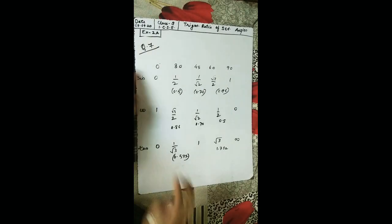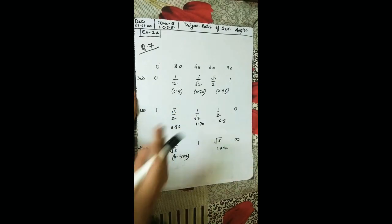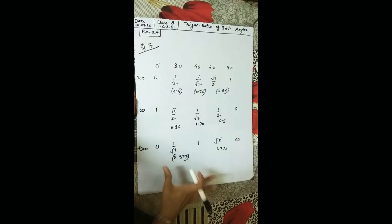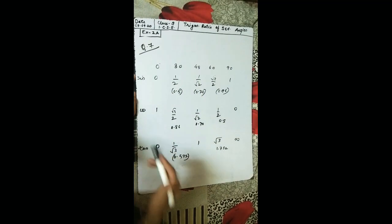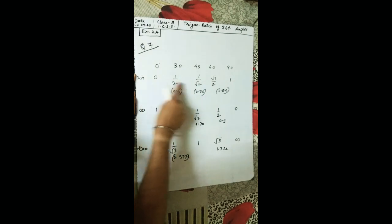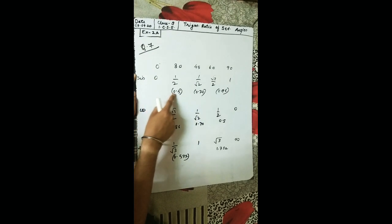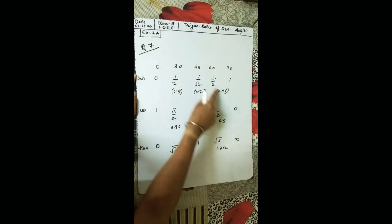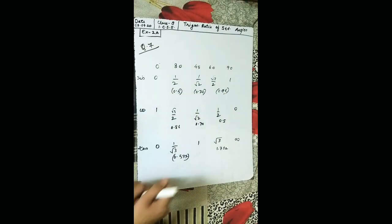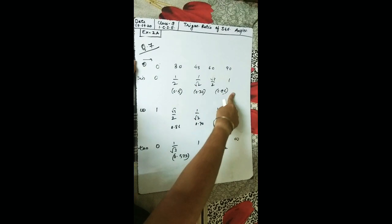Question 7: fill in the blanks with less than, more than, or equal to. Let's take the trigonometric table values. For sine: 0, 0.5, 0.70, 0.86, 1 — as θ increases, the value of sine also increases. For cos: 1, 0.8, 0.7, 0.5, 0 — as θ increases, the value decreases.